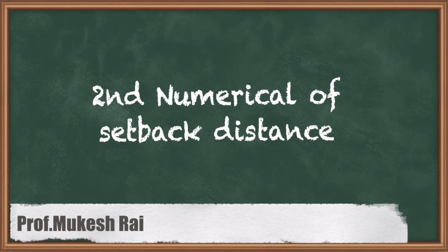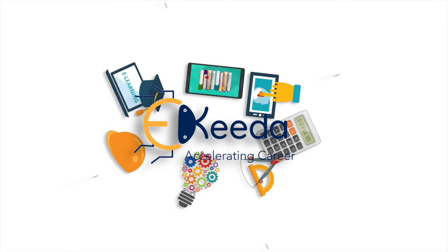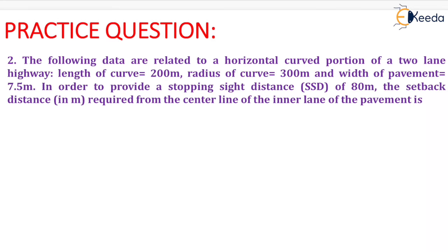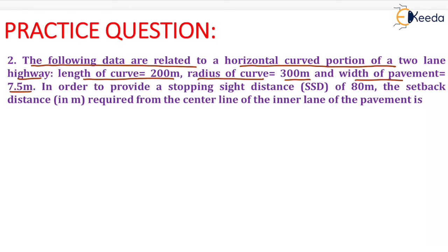Hello students, today we are going to solve the second numerical of setback distance. The question is: the following data are related to a horizontal curved portion of a two-lane highway. Length of curve is 200 meters, radius of curve is 300 meters, and width of pavement is 7.5 meters. In order to provide a stopping sight distance of 80 meters, find the setback distance in meters required from the center line of the inner lane of the pavement.